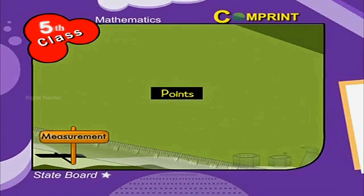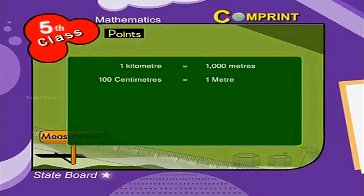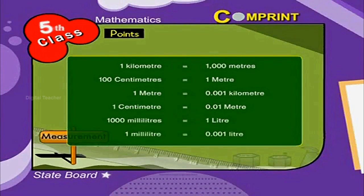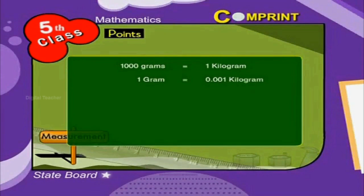Points to remember: 1 kilometer is equal to 1000 meters. 100 centimeters is equal to 1 meter. 1 meter is equal to 0.001 kilometer. 1 centimeter is equal to 0.01 meter. 1000 milliliters is equal to 1 liter. 1000 grams is equal to 1 kilogram. 1 gram is equal to 0.001 kilogram. 1 quintal is equal to 100 kilograms.